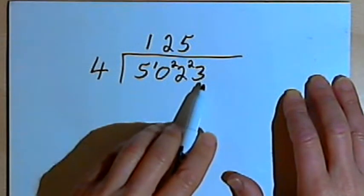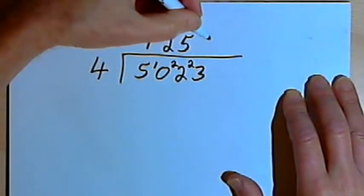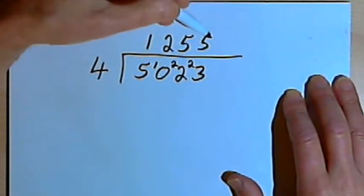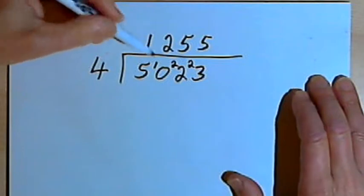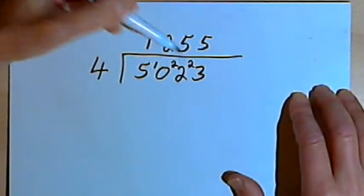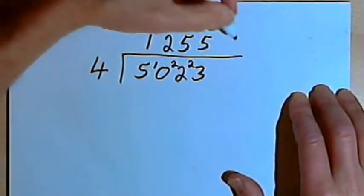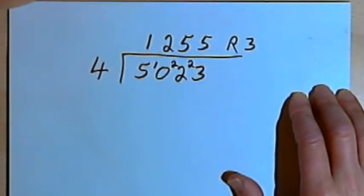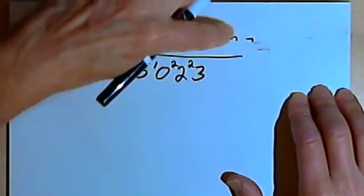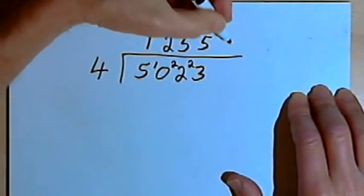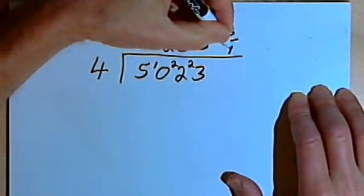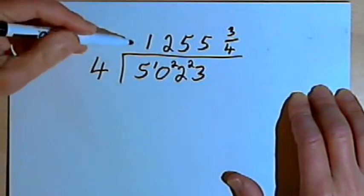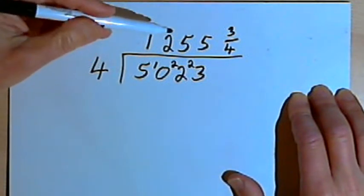4 divided into 23 goes 5 times. 5 times 4 is 20, so 20 subtracted from 23 is 3. So I've got a remainder of 3. So I could either write r3 for a remainder of 3 at the end of it. But I'm going to put this in as a fraction, and that would just be 3 over 4. So my answer is 1,255 and 3 quarters.